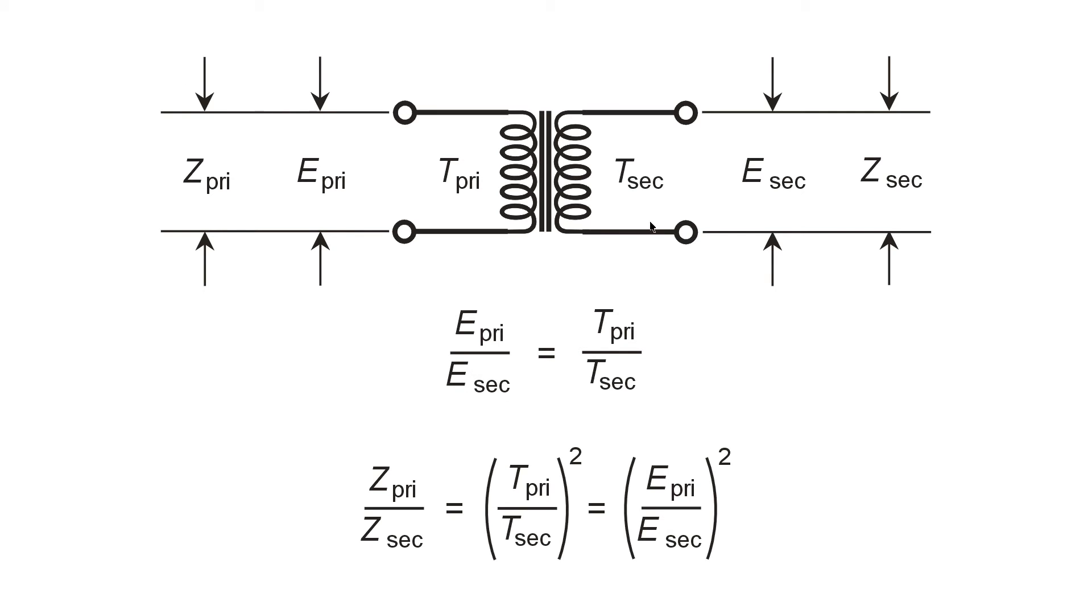So a 2 to 1 transformation ratio in voltage is the equivalent of a 4 to 1 transformation in impedances, or 2 squared.